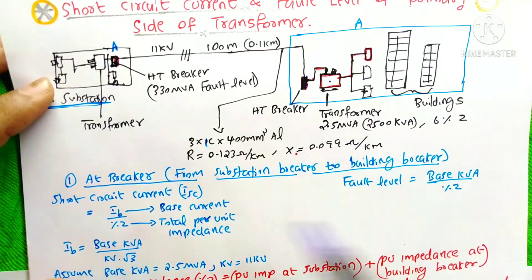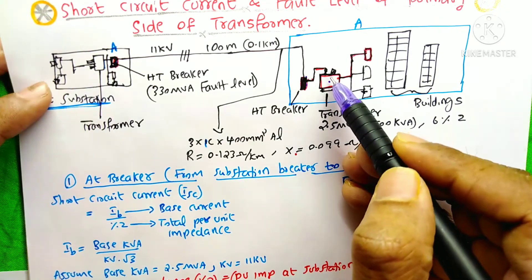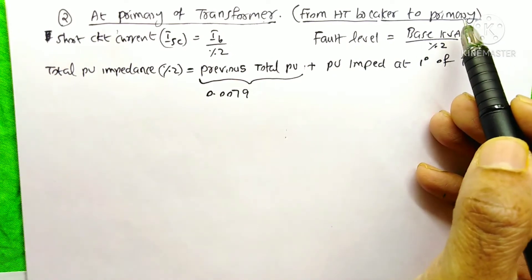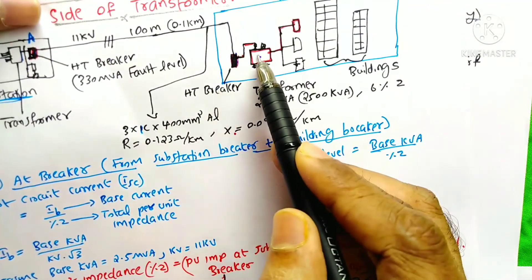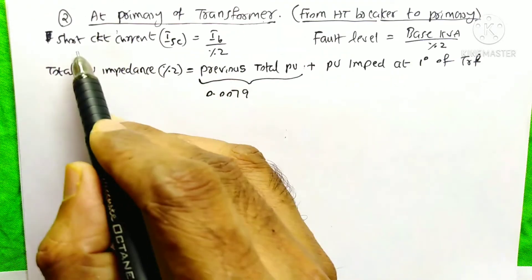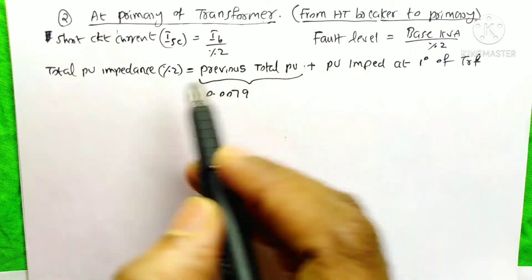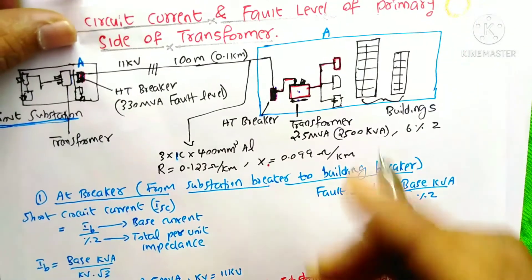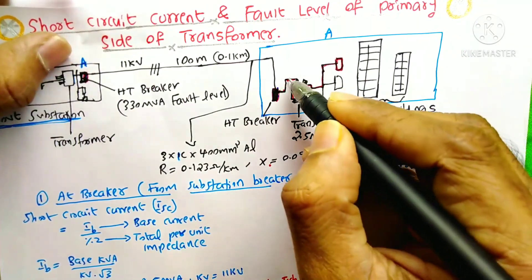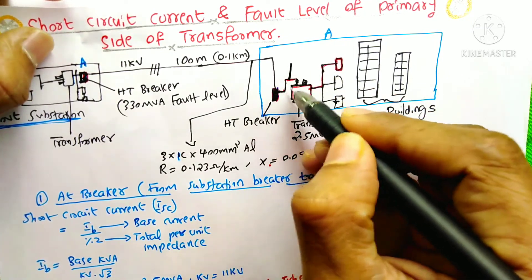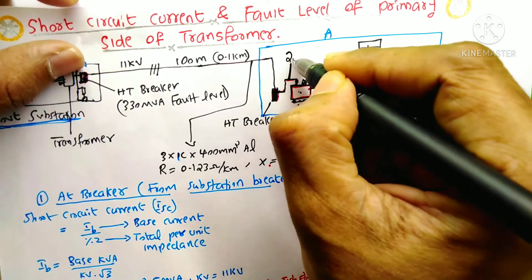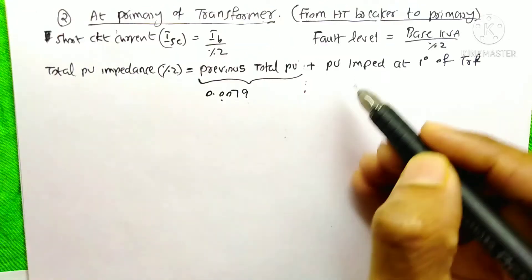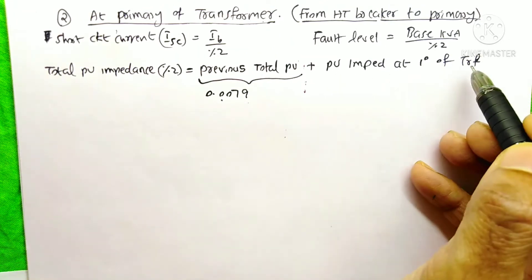Now we calculate the short circuit current and fault level at the primary side of this transformer, considering from the HTA breaker to the primary of the transformer. The new total per unit impedance equals the previous total per unit impedance plus the per unit impedance at the primary of the transformer. For this, we need the cable data from the HTA breaker to the primary side — I am taking this cable length as 20 meters.